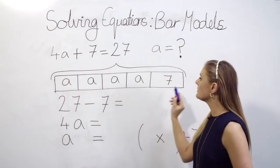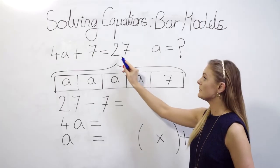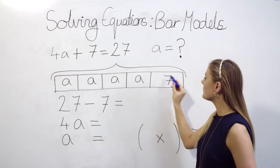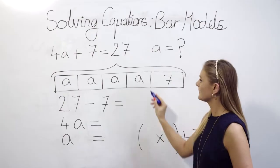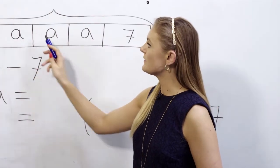So if we take our bar model we know that the total value is 27 so I've labelled that up here. I know one part is the value of 7 and then there are remaining four equal parts all of which are the value of a.